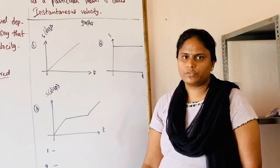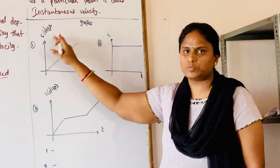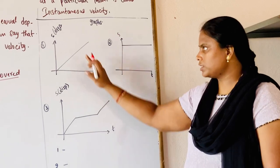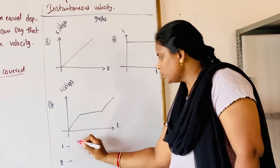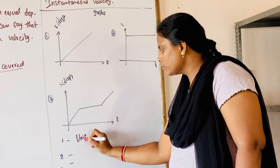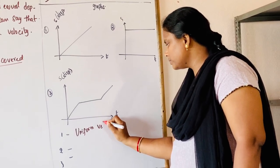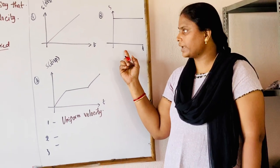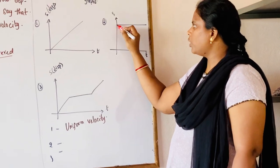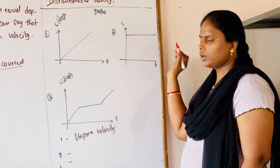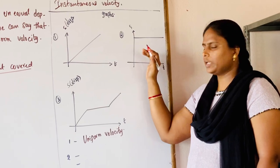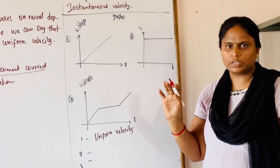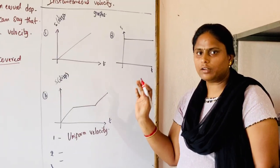Here the first graph is between time and displacement — it is a straight line passing through the origin, so we can say that the body is moving with uniform velocity. In the second graph, the graph is parallel to the x-axis or time axis, meaning there is no displacement with respect to time, so the body is at rest.